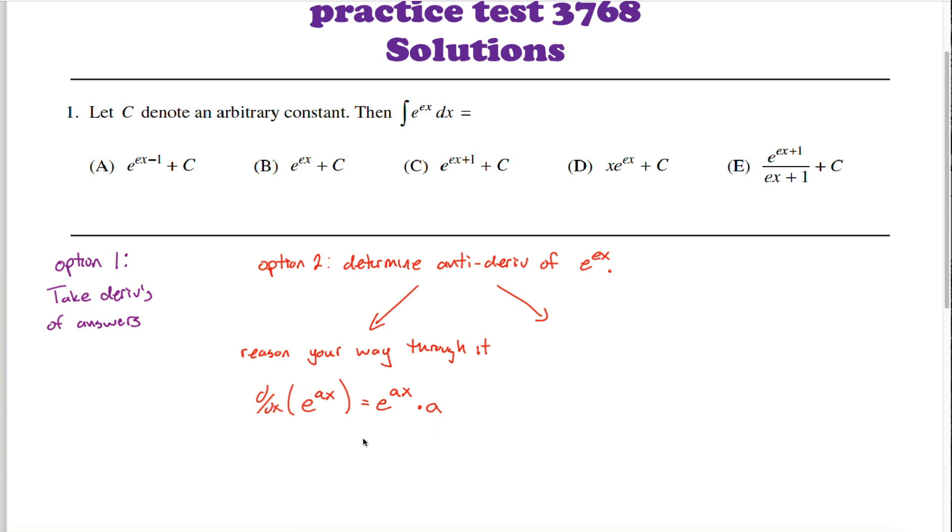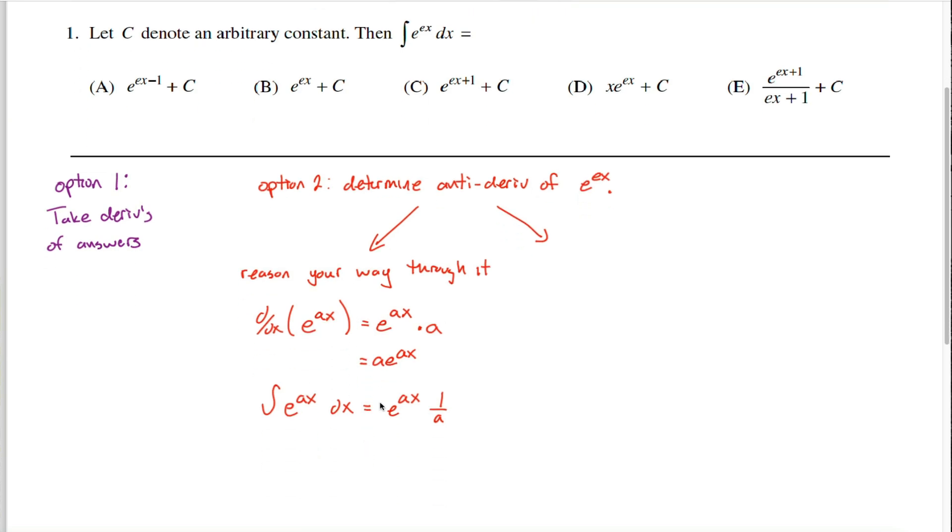Because the derivative of e to the ax is a times e to the ax, the antiderivative of e raised to the ax power is going to almost just be e raised to the ax power, but it's not quite that because if you took the derivative of this side, you'd end up with this extra a, and I don't want this extra a. I need 1 over a to cancel out with the extra a. What I'm saying is that the antiderivative of e to the ax power equals 1 over a times e to the ax power.